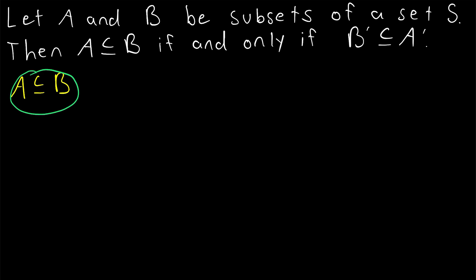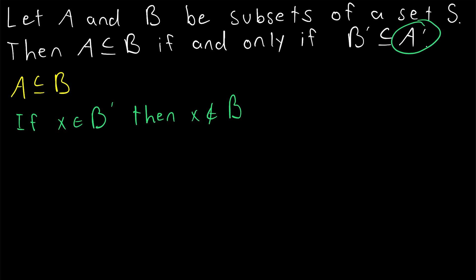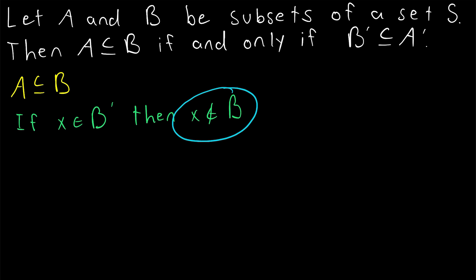We have assumed that A is a subset of B, and we want to show that B complement is a subset of A complement. Let's begin with an element of B complement. So if an element X is an element of B complement, then by definition of B complement, X is not an element of B. Remember, our goal is to show that X must be an element of A complement, because we want to show everything in B complement is also in A complement. So any element of B complement certainly is not an element of B.